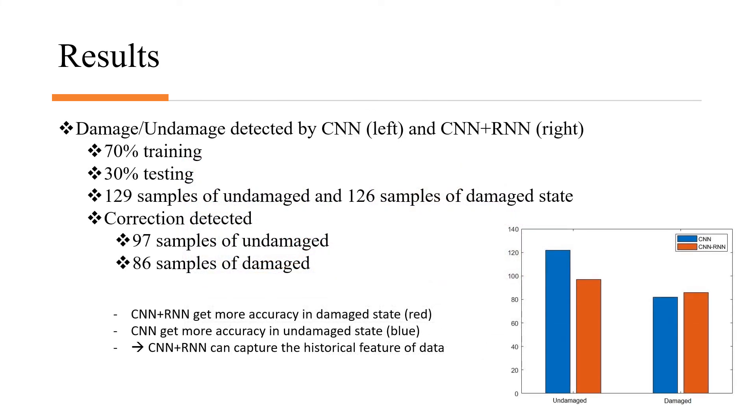In both cases, the results have shown that the proposed CNN plus RNN method gets more accurate results in damaged states and undamaged states. And it can also capture the historical features of the data.